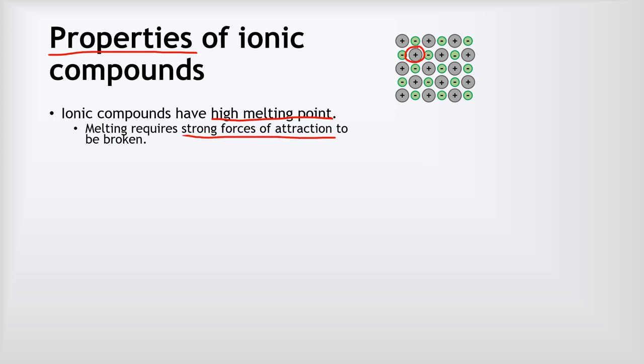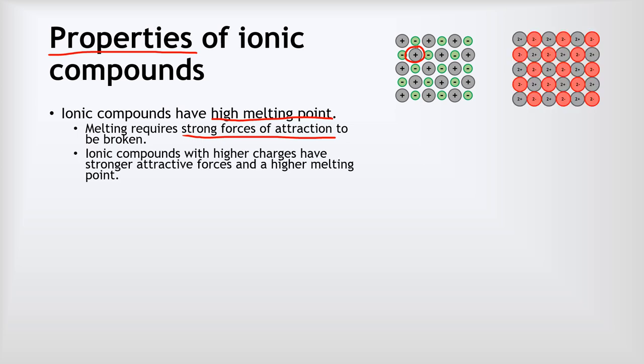Property number one is that they have high melting points. The reason why is because melting them requires you to break the strong forces of attraction between the ions. That positive ion is held in place by really strong attractions to the negative ions around it, and the negative ions are attracted to all the positive ones around them. That takes a lot of energy to break those forces. If we've got an ionic compound made from ions with higher charges, like 2+ and 2-, those will have an even stronger attraction to each other, which will give them an even higher melting point.